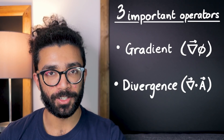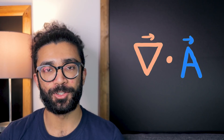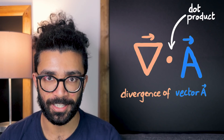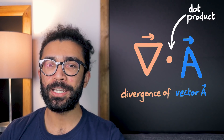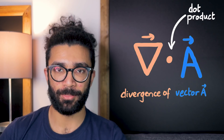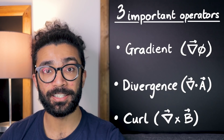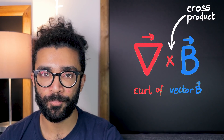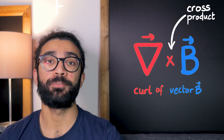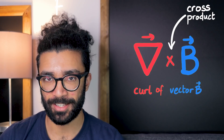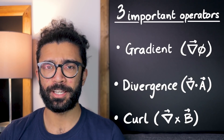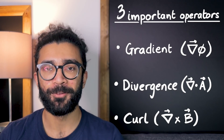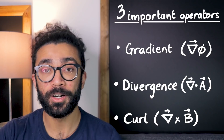The second operator is known as divergence, which is written as a dot product between the NABLA operator and any vector field that we happen to be studying — divergence is written mathematically like this. And the third interesting operator is known as curl. It's written like a cross product between NABLA and the vector field we happen to be studying. Essentially these operators just give us some different kinds of information about the original field that we applied them to, whether that's a scalar field or a vector field.